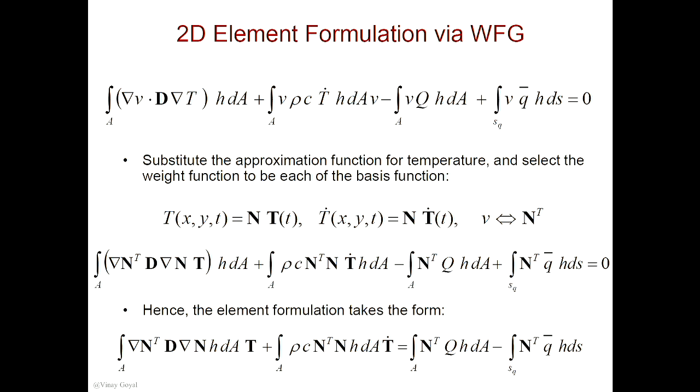And that's what you see here. I selected A plus BX plus CY plus DXY, where ABCD is what we need to find. And my shape function — what I'm really looking for is the shape functions N1, N2, N3, and N4, because they're the basis functions, and T1, T2, T3 are the nodal temperatures.